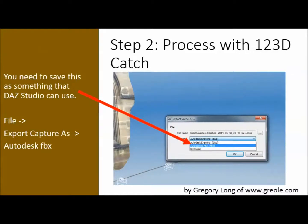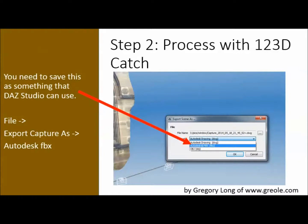You then go up to File, go to Export Capture As, and pick Autodesk FBX, then just give it a name. Make sure you know where you've saved this — make sure you notice where you've saved it. Sometimes I just save it and I can't find it for the life of me.